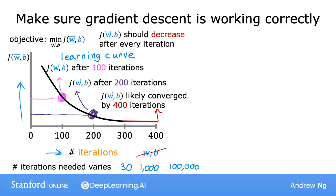It turns out to be very difficult to tell in advance how many iterations gradient descent needs to converge, which is why you can create a graph like this, a learning curve, to try to find out when you can stop training your particular model.